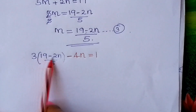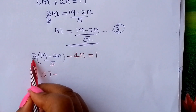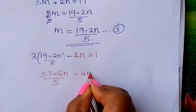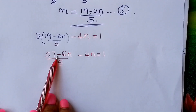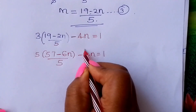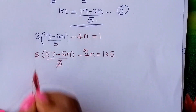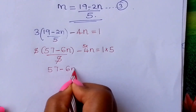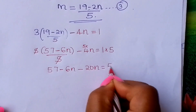Remove the bracket: 3 multiplied by 19 is 57, and 3 times 2n is 6n, so we have 57 minus 6n, all over 5, minus 4n equals 1. Remove this denominator by multiplying every term by 5. So 5 and 5 cancel out, and you are left with 57 minus 6n minus 20n equals 5.